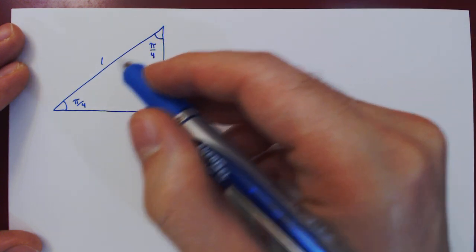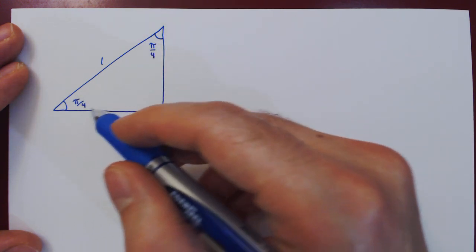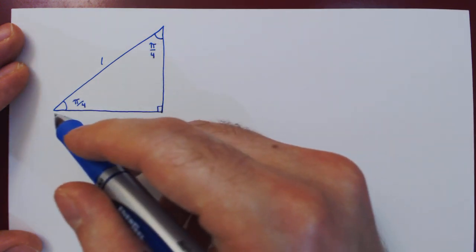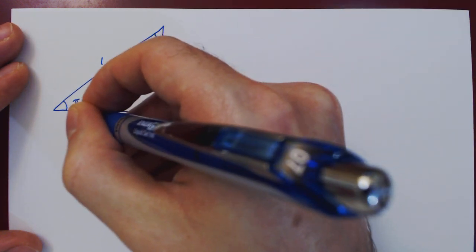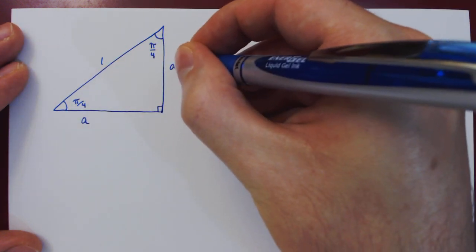So this means that since both angles here are the same, we have an isosceles triangle. So this edge and this one are of equal length. Say they're both equal to A.